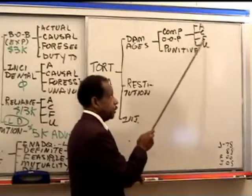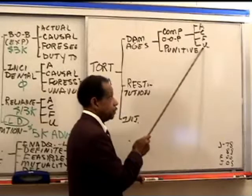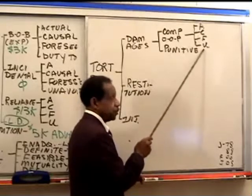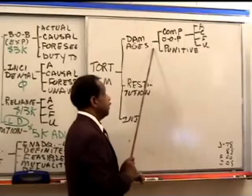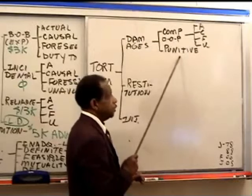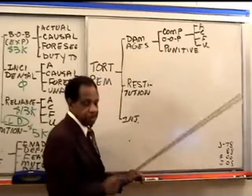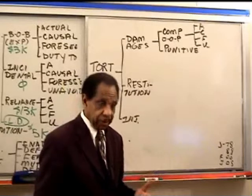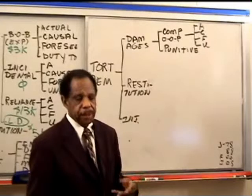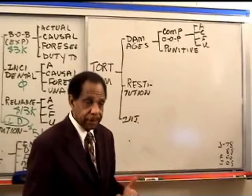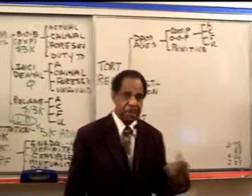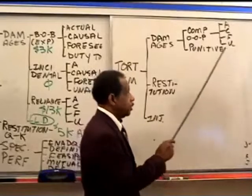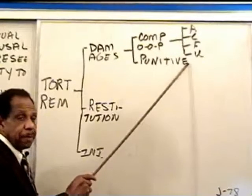We need to talk about these a little more in just a minute, particularly the foreseeability one. The other type of damage is punitive damages. Punitive damages apply only when it is an intentional tort, as opposed to negligence. And the intentional tort must be committed with malice in order to get punitive damages. So for punitive damages, you need an intentional tort committed with malice.